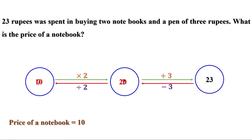That means the price of a notebook is 10 rupees. We can check: the price of a notebook is 10 rupees, so two notebooks cost 20 rupees, and a pen of 3 rupees is added, giving a total of 23. Our answer is right.